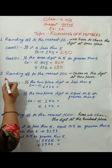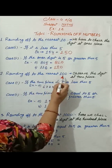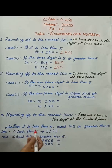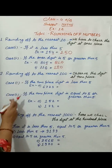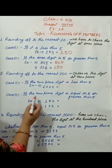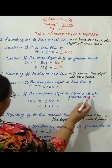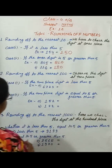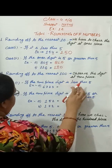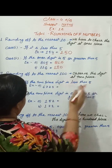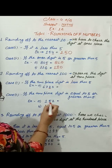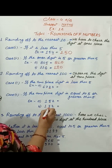Now, rounding off to the nearest hundred. Here we observe the digit at the tens place. Two cases also arise. Case one: if the tens place digit is less than five. Case two: if the tens place digit is equal to five or greater than five.